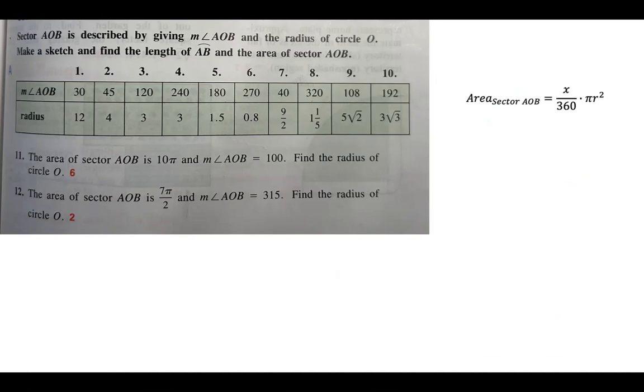Last one, you said number 12. It gives you the area and it gives you the central angle. What it doesn't give you is the radius, so they want you to find the radius. I'm going to take the area formula right there. I know the area is 7π over 2. I know the central angle is 315. I'm just going to solve for r.